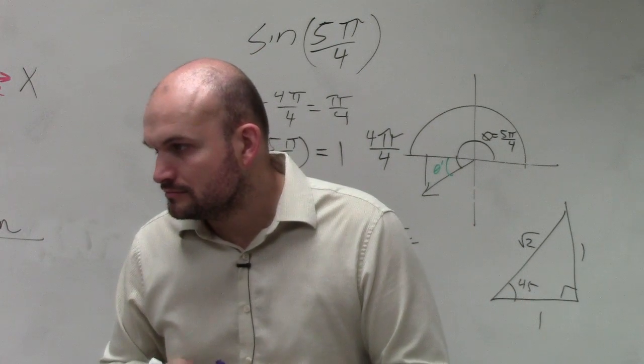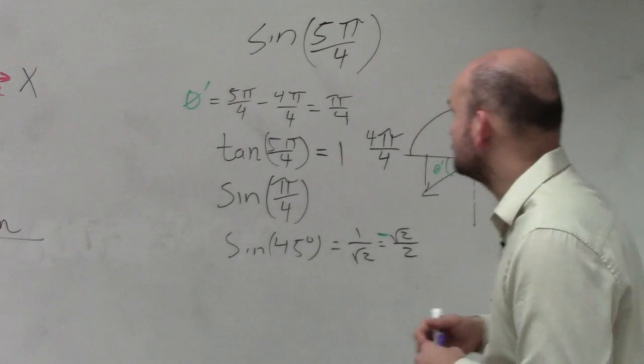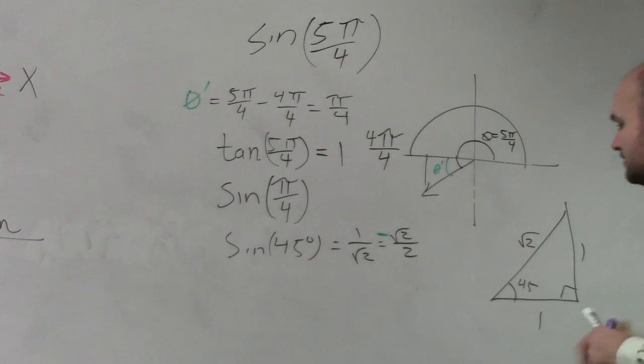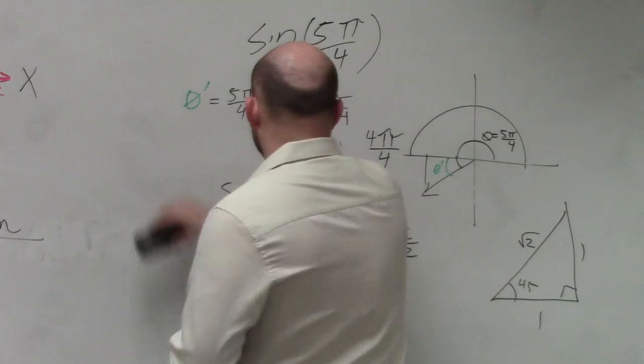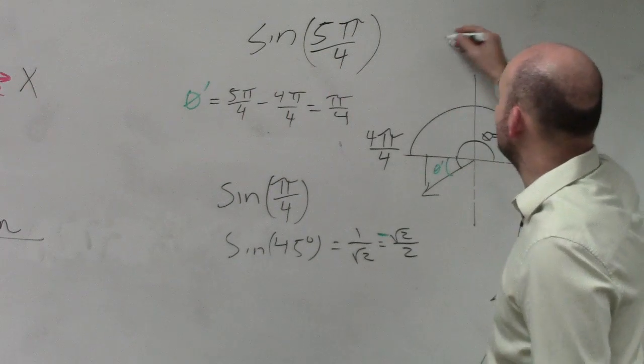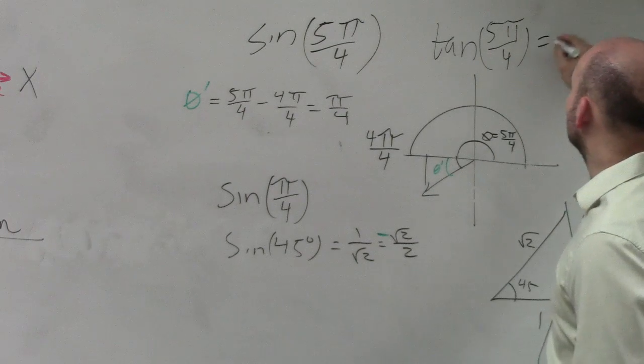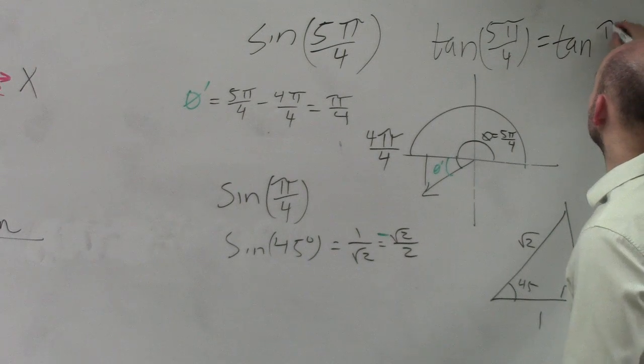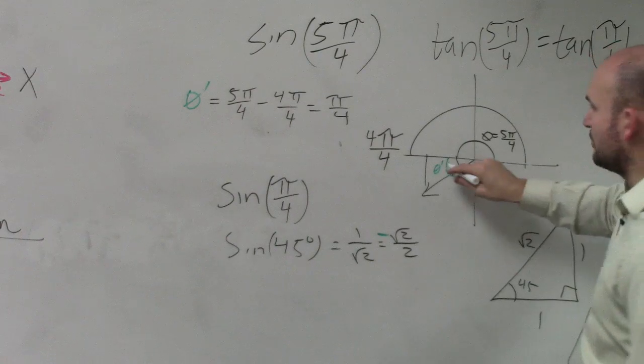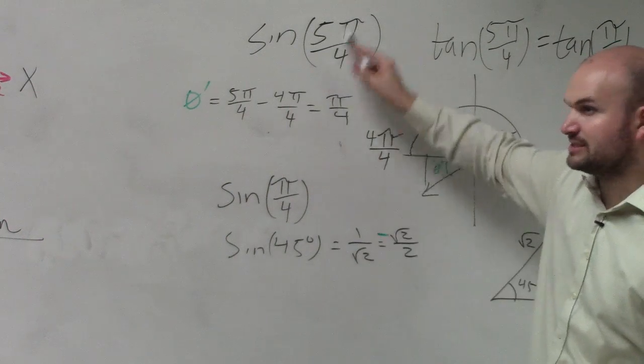How did you change tangent of 5 pi over 4 just to sine pi over 4? I didn't. I was just doing a different trigonometric function. I was just saying, what if I asked you also what was tan of 5 pi over 4? Well, we know tangent of 5 pi over 4 is the same thing as tangent of pi over 4. That's what I just explained about reference angles. These are exactly the same.